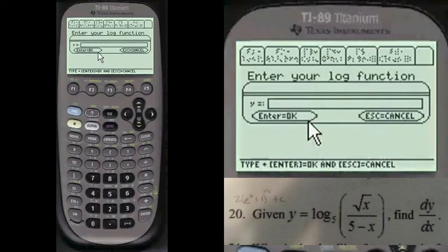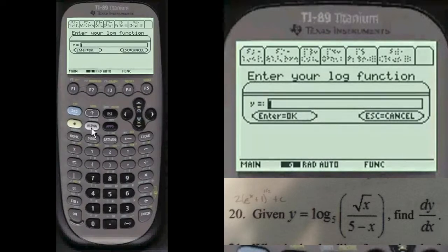So we're going to enter our function. You have to press alpha before you enter anything into these entry lines here. We're going to press alpha, and then second alpha, so we can put in the log, which is L, O, G, and then alpha to put the 5 for the base.